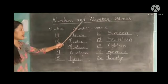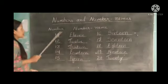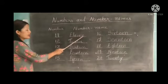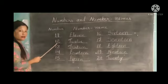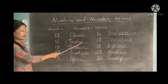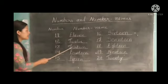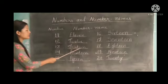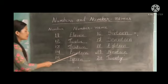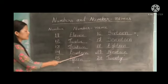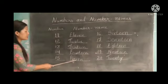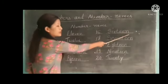Now we can see the numbers and number names. Number 11, E-L-E-V-E-N, eleven. 12, T-W-E-L-V-E, 12. 13, T-H-I-R-T-E-E-N, 13. 14, F-O-U-R-T-E-E-N, 14. 15, F-I-F-T-E-E-N, 15. 16.